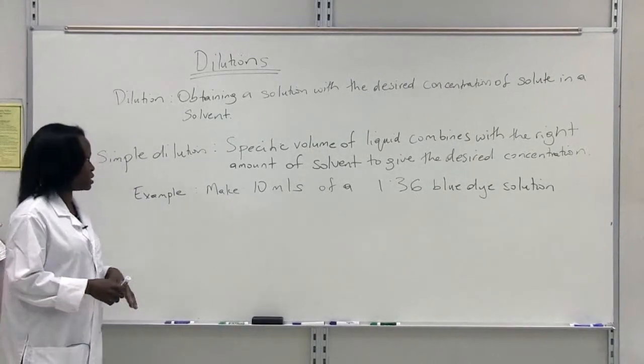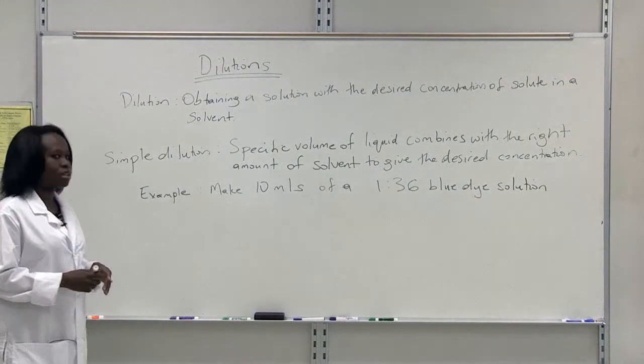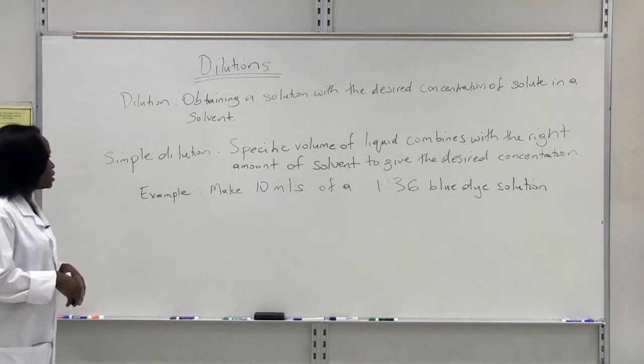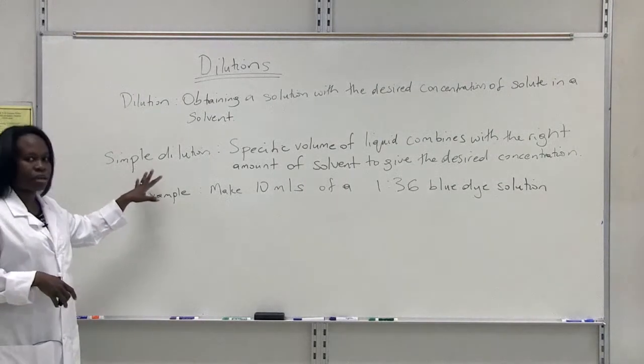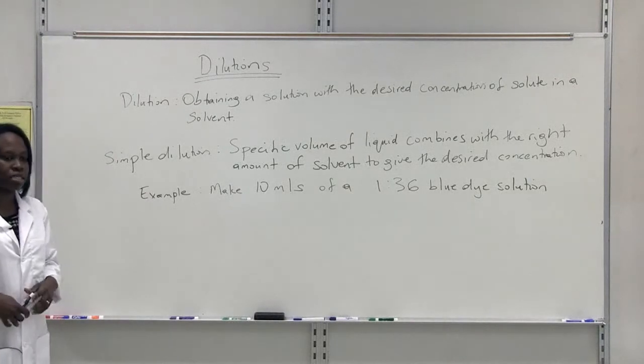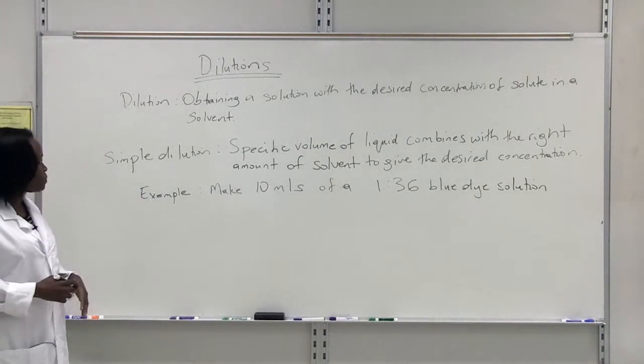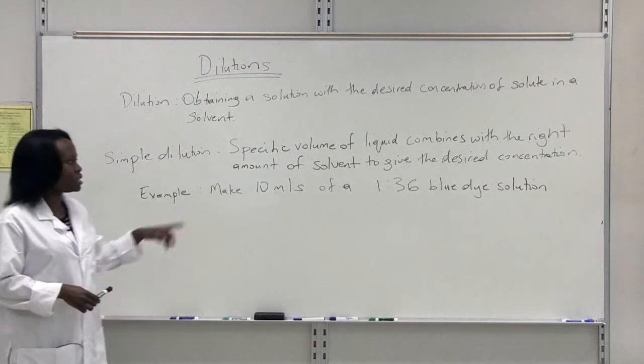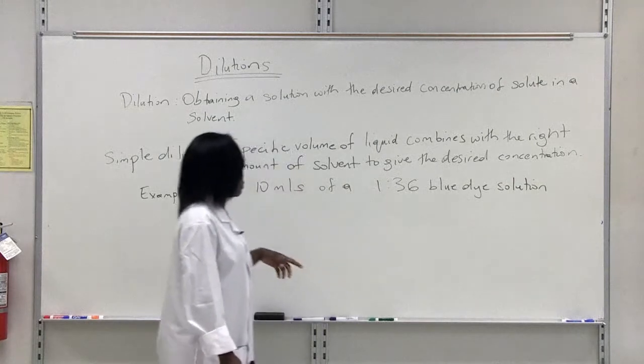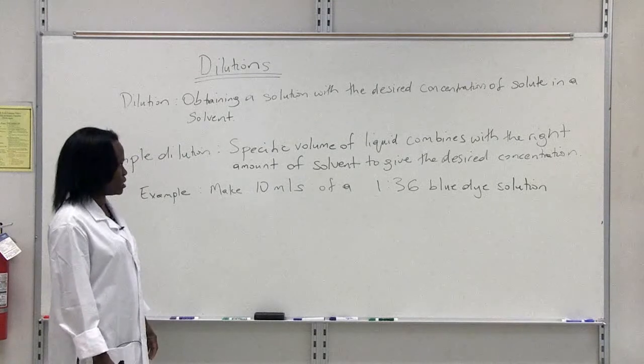So there are different types of dilutions that you'll be going through and exploring in your lab protocol. The first one that we're going to be talking about is a simple dilution. How do we make a simple dilution? Basically, when we're making up simple dilutions, we're using a specific volume of a liquid and you're combining that with the right amount of solvent, and that will give you a desired concentration.